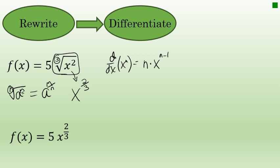So here we have an n of 2/3. So the derivative is 2/3 times the coefficient 5 times x to the power of 2/3 minus 1.